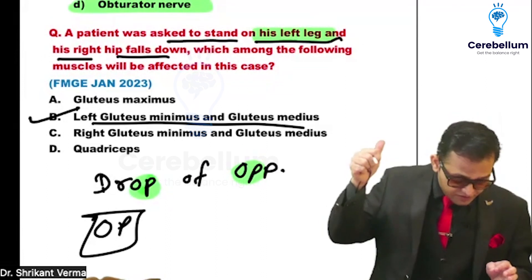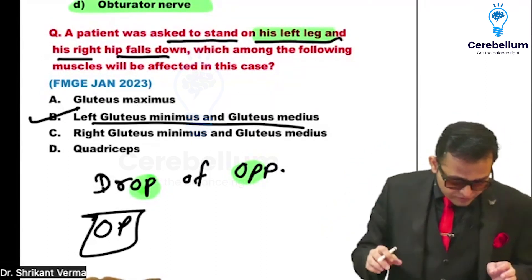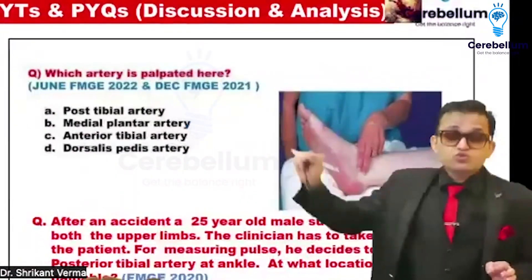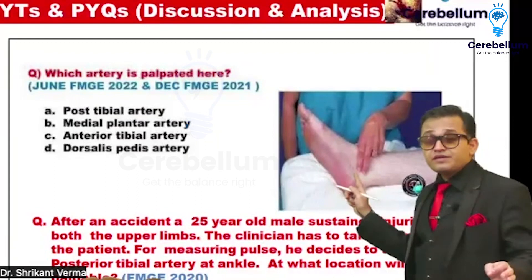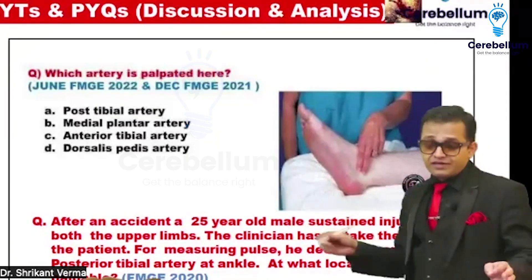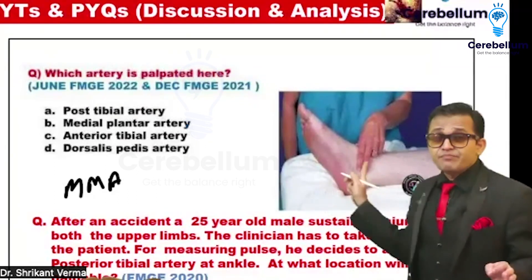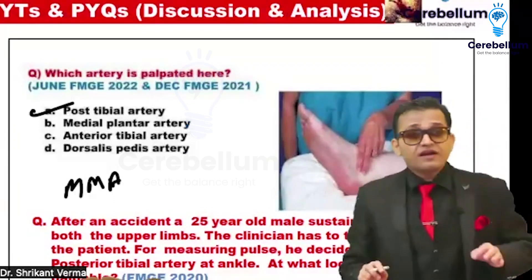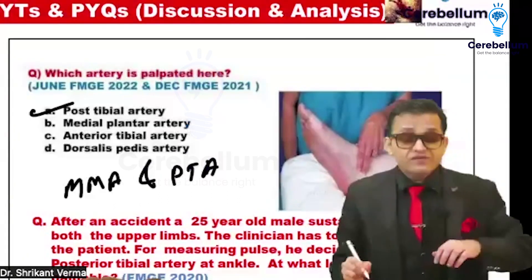Very good, very nice. Now the other question — this question comes up frequently. Middle meningeal artery and the artery just behind the medial malleolus: the answer is the posterior tibial artery. These are two very frequently asked questions.